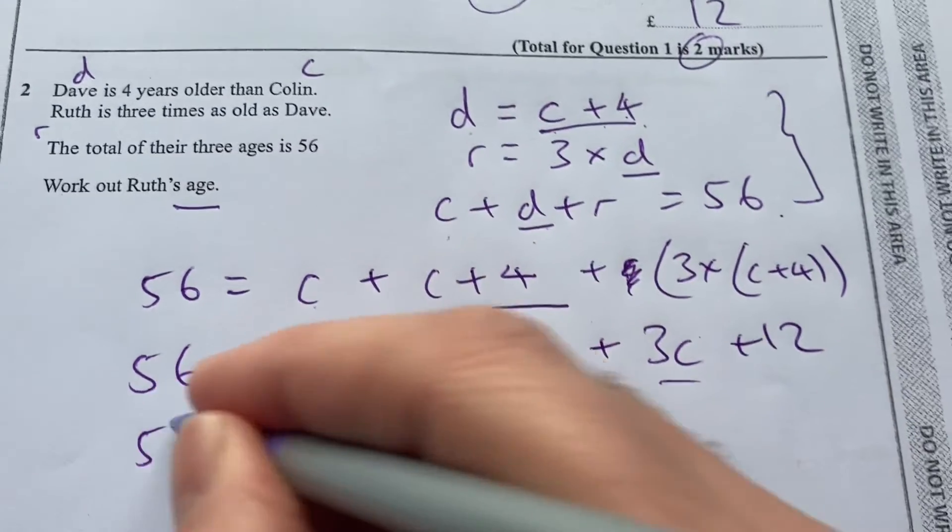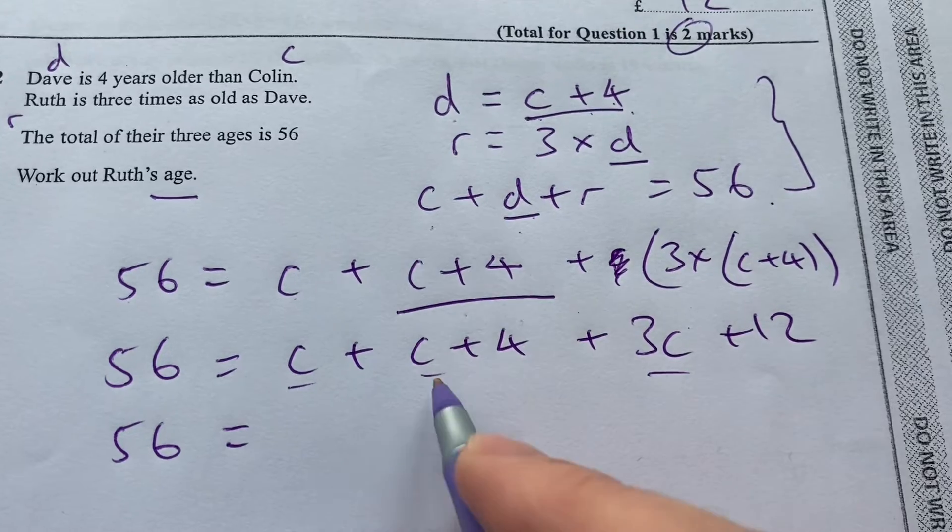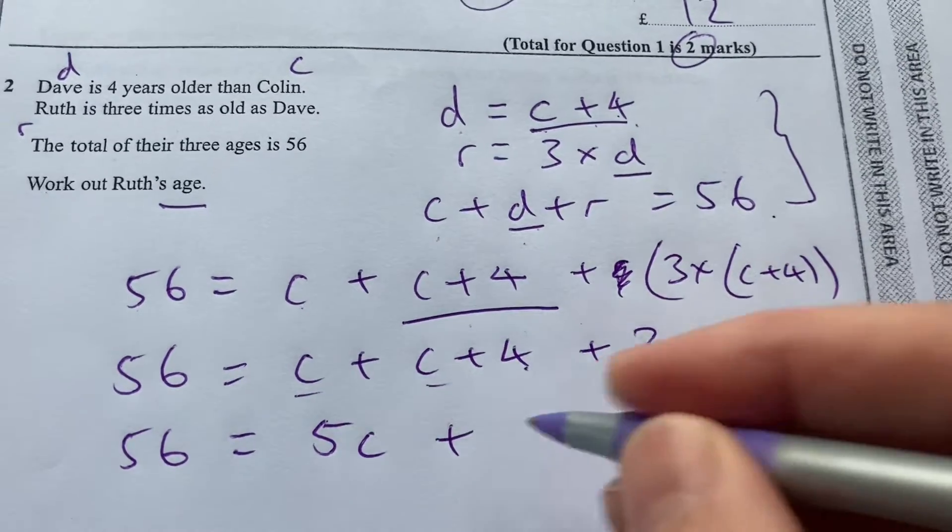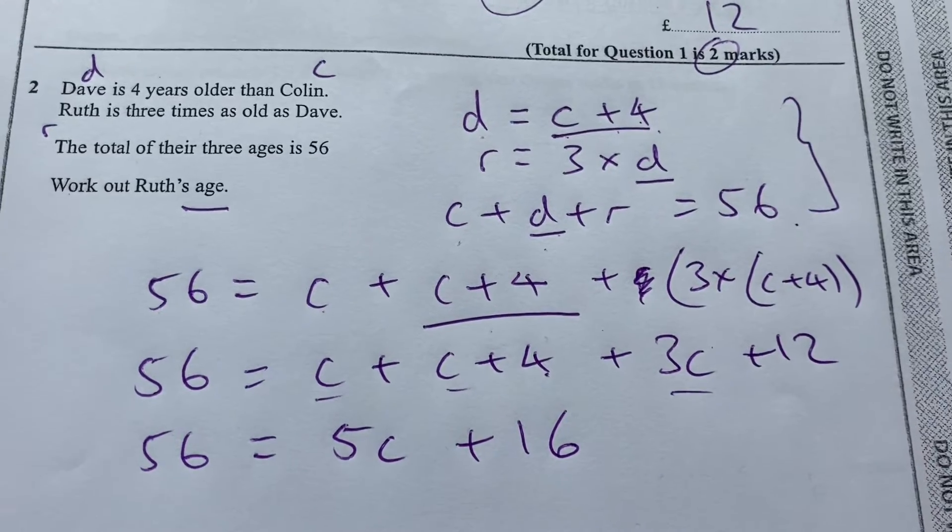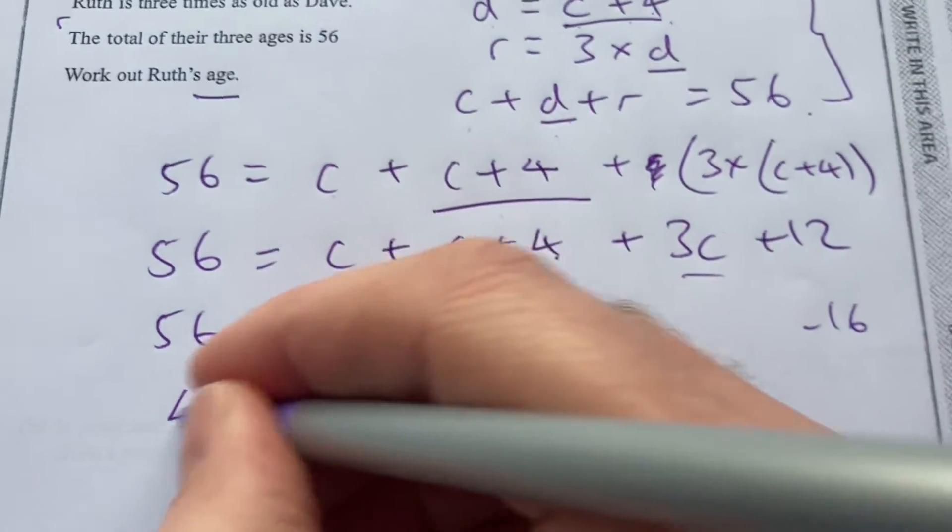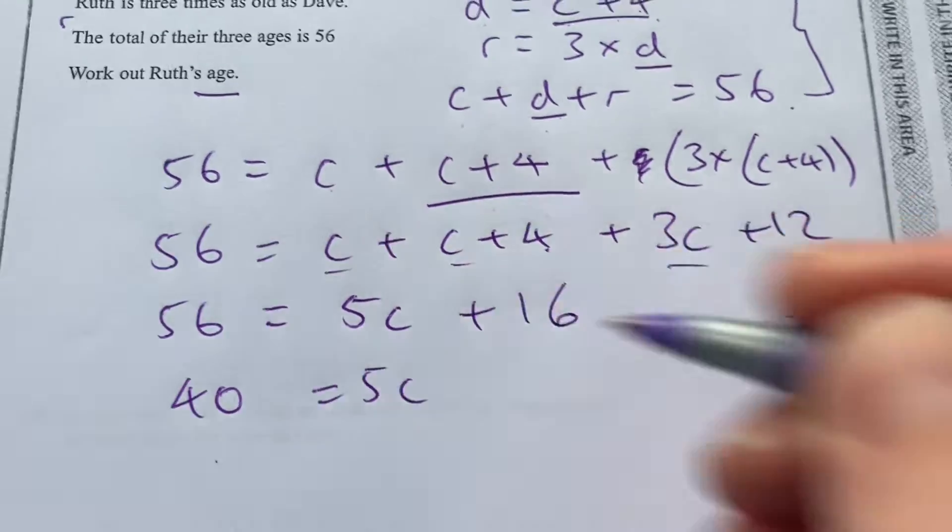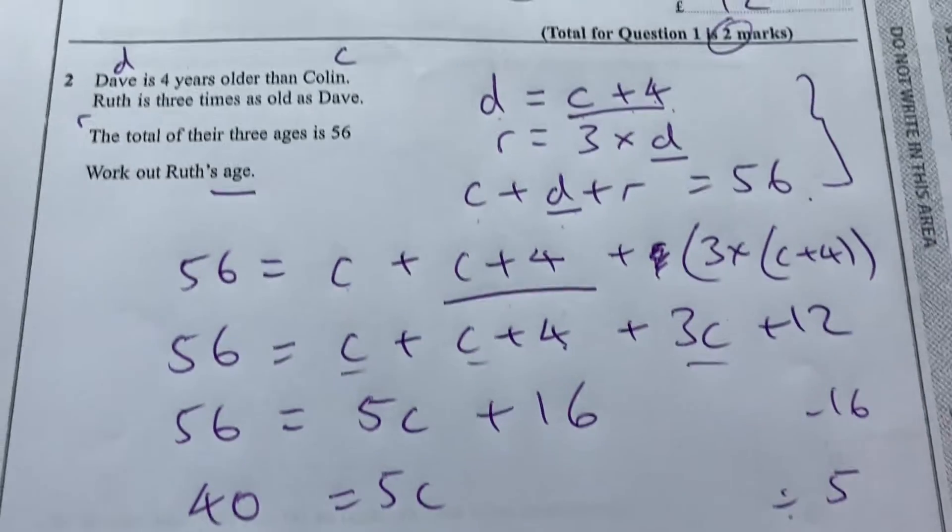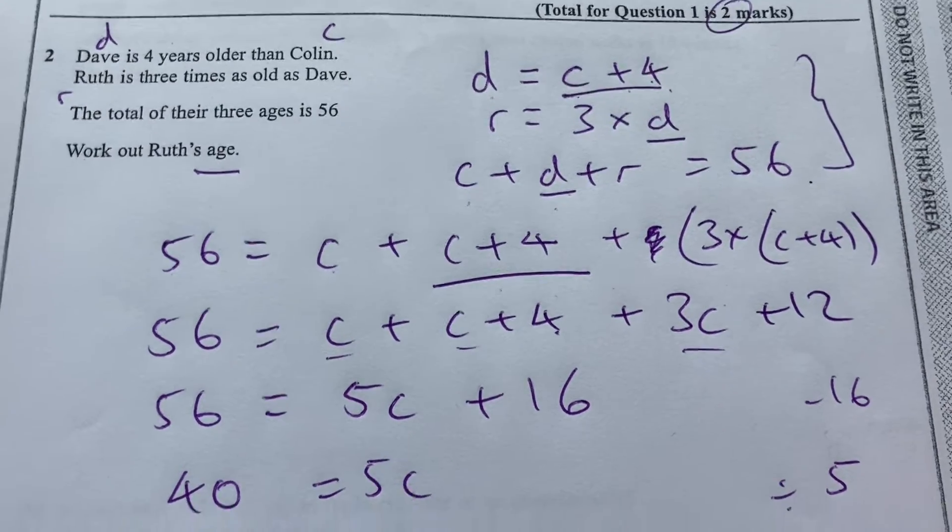So 56 on the left-hand side, 1, 2, 3, 4, 5C plus 4 plus 12 is 16. Remember, it's a non-calculator paper. So now I'm going to take away 16 on both sides and divide by 5. And that way I know that Colin is 8.